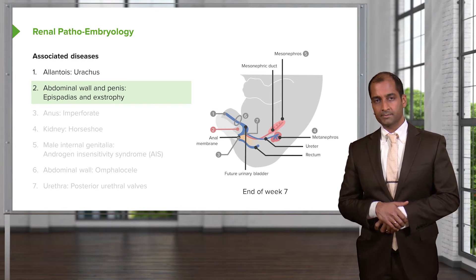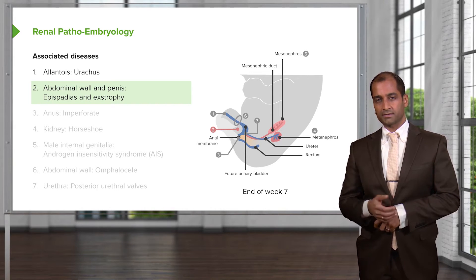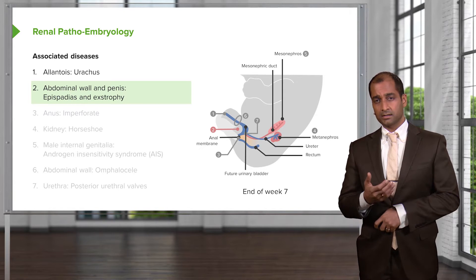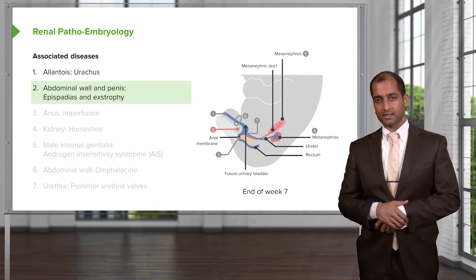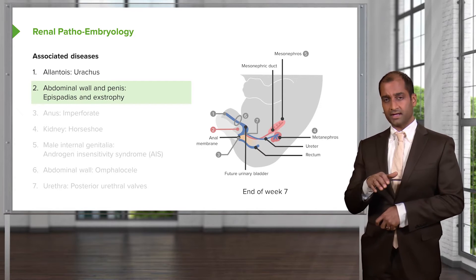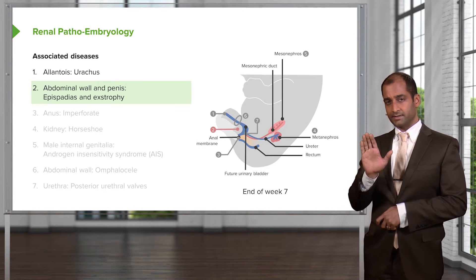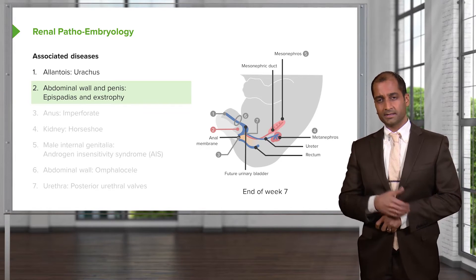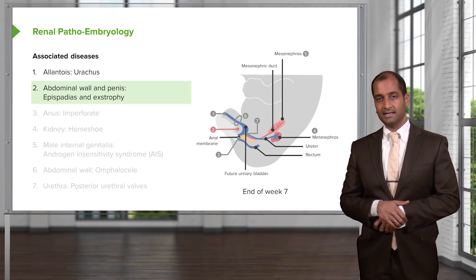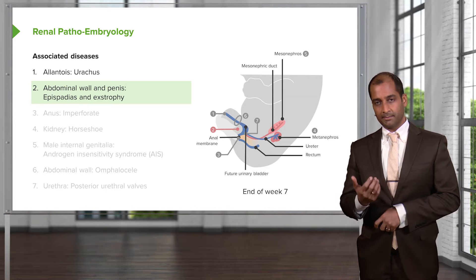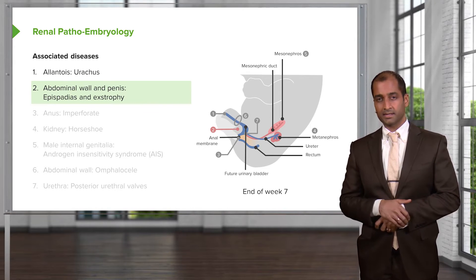Abdominal wall, number two, and penis — we're thinking about epispadias. When you say epispadias, that refers to the top of the penis, the dorsum of the penis. Just like when you dorsiflex the foot it comes up, the dorsum of the penis, if it was to be open, is epispadias. You're then worried about a complication called urinary bladder exstrophy. Hypospadias would be the ventral aspect of the penis — a completely different discussion.